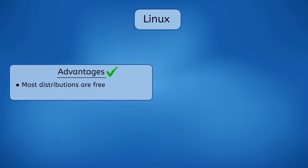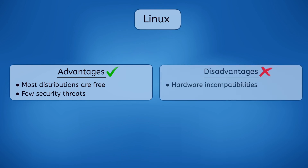The most obvious advantage of Linux is that most distributions are completely free — you just download and install them. Plus, since Linux is only used by a handful of people, hackers rarely ever bother trying to hack it, so it's hyper-secure. The disadvantage, however, is that each Linux distribution contains different device drivers, so you may discover your system is incompatible with some hardware devices. Also, most software is made for Windows or Mac OS, so finding comparable software that works on Linux can be challenging.